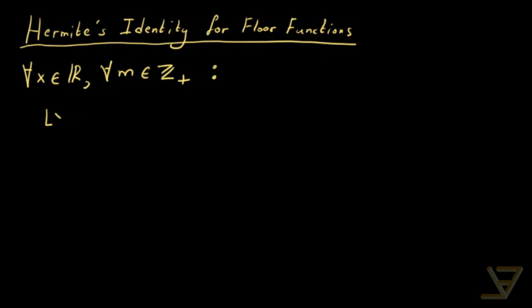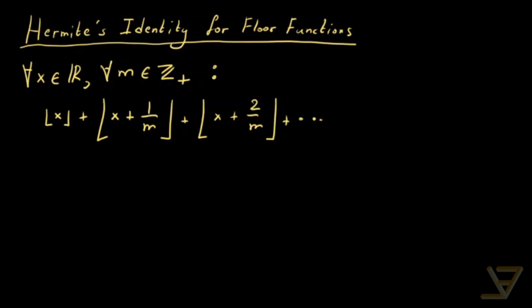The floor function of x plus the floor function of x plus 1 over m, plus the floor function of x plus 2 over m, all the way through to the floor function of x plus (m minus 1) over m — just one step shy of m — is equal to the floor function of mx. This might seem like an esoteric identity, and it's not particularly useful, but it also comes up in olympiads as well as other math competitions.